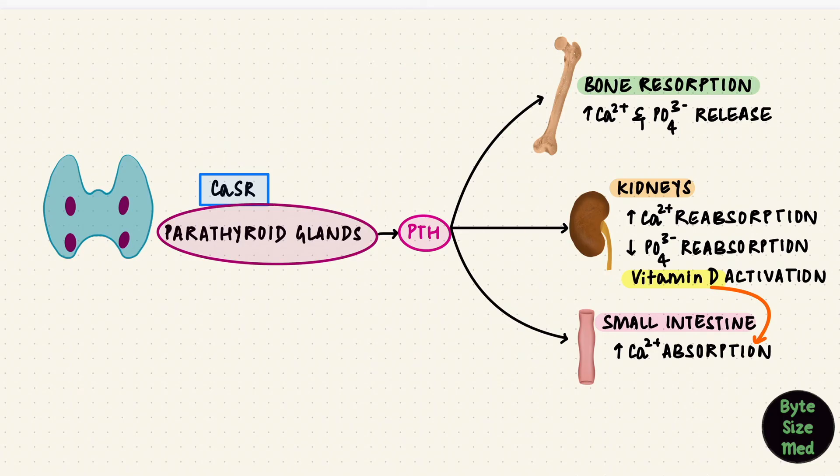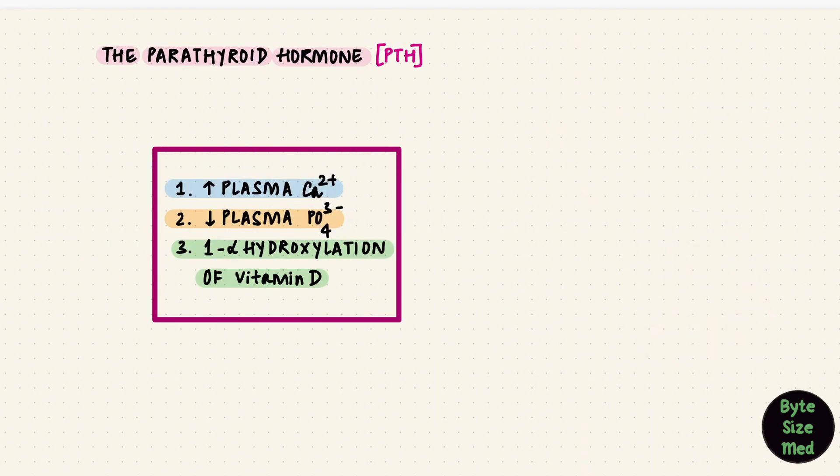Ultimately, it's really important for maintaining calcium and phosphate homeostasis. And in the end, you just need to remember those three sentences. It loves calcium, hates phosphate, and activates vitamin D. That is how the parathyroid hormone works.